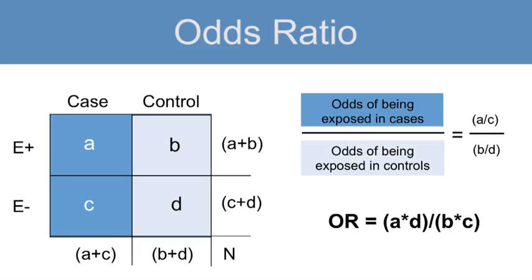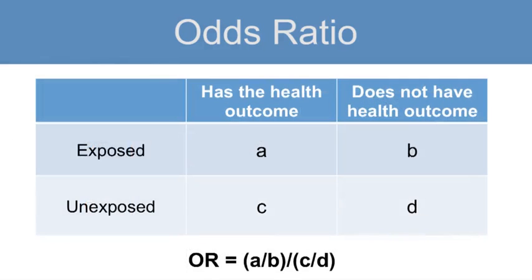Mathematically, this is the same as the cross-product, which is equal to A times D divided by B times C. The odds ratio is the ratio of the odds of the health outcome or disease in the exposed relative to the odds of the disease or health outcome in the non-exposed or less exposed group.